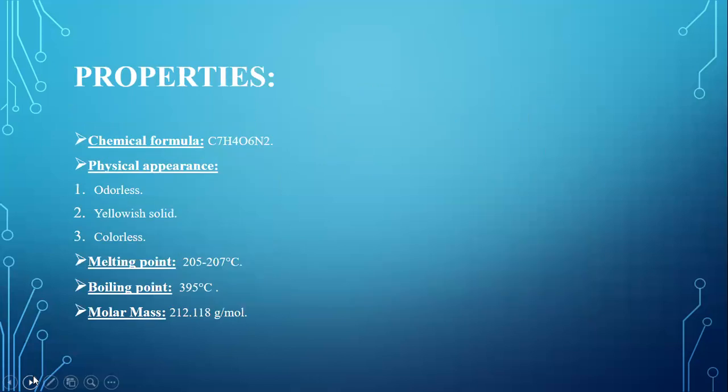Now moving towards its properties, its chemical formula is C7H4O6N2 and physical appearance include. It is a yellowish solid which is colorless and odorless.